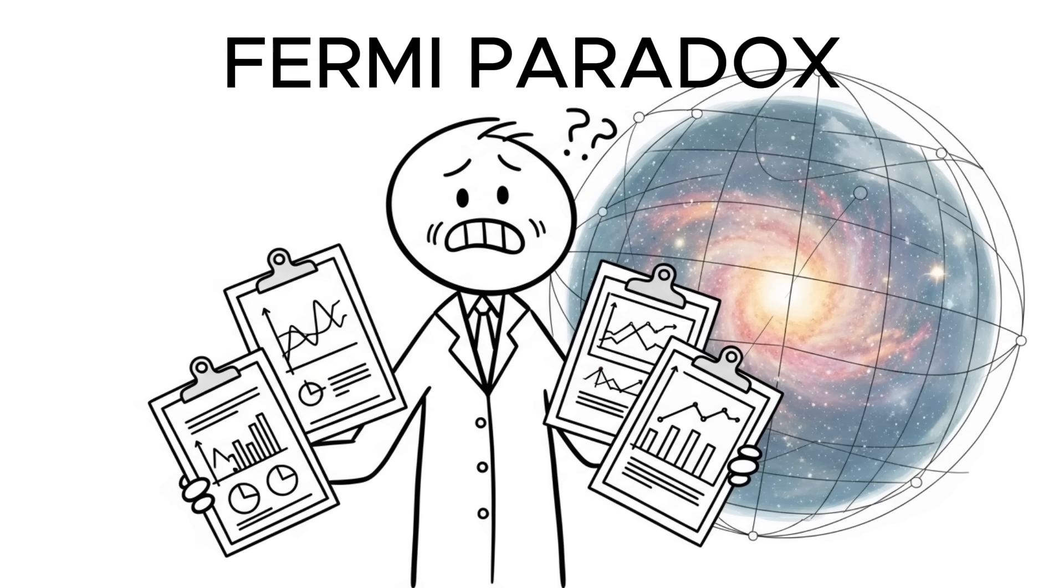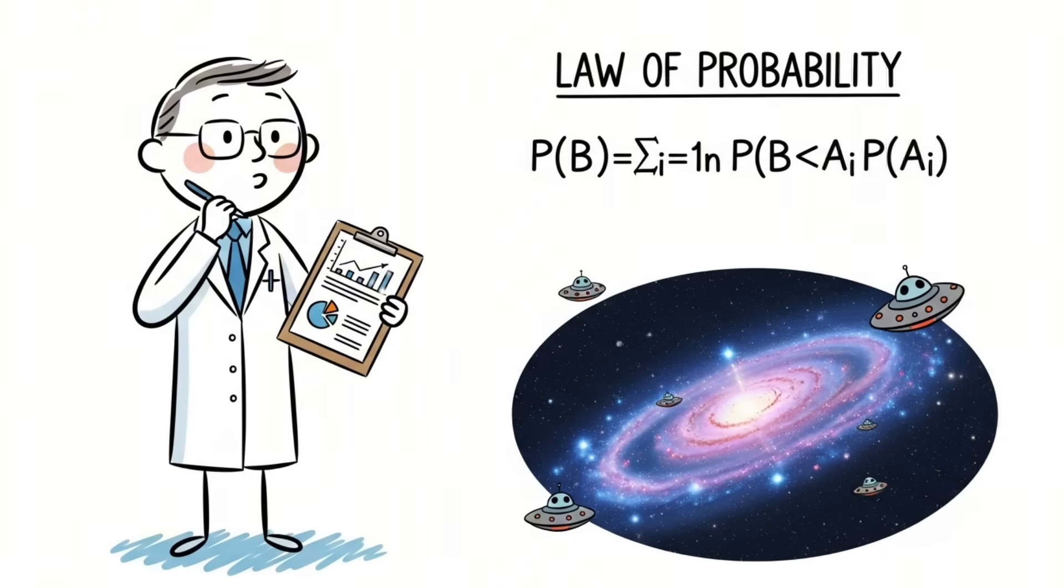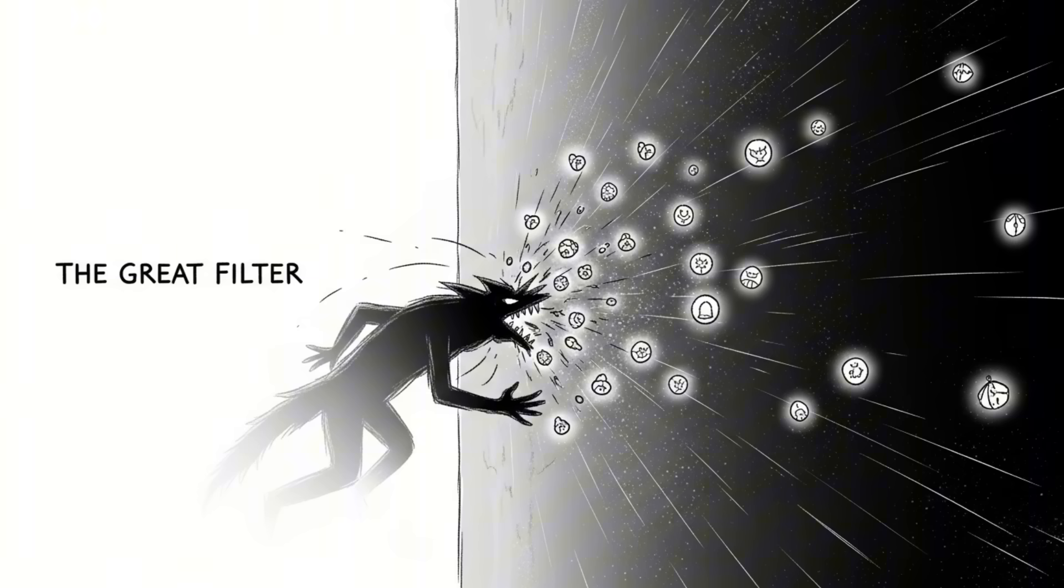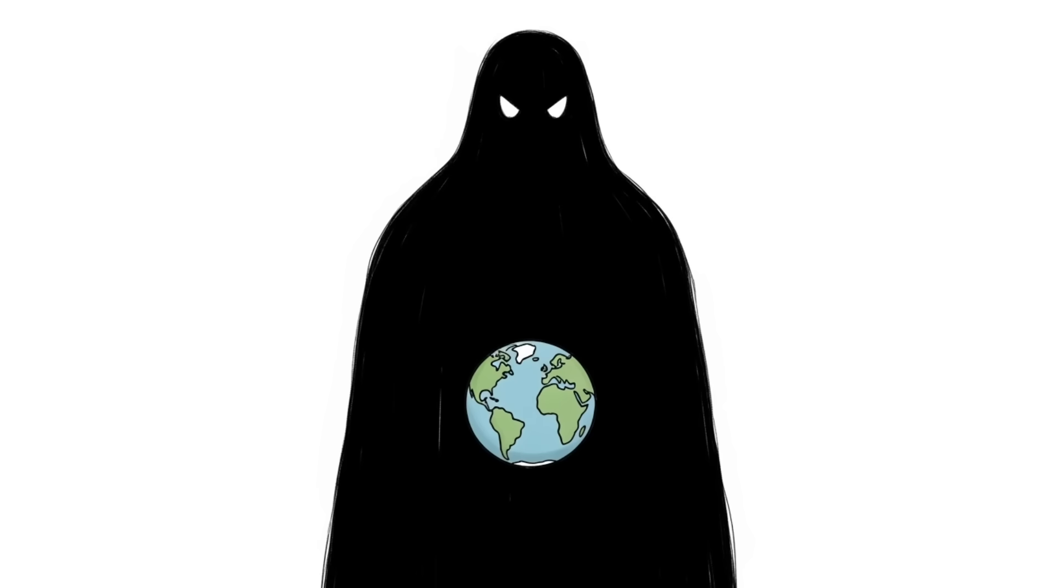This is the Fermi paradox, and it is one of the most terrifying questions science has. Because according to the law of probability, there is a high likelihood of extraterrestrial life. People came up with a wild theory called the great filter, where some predator or force destroys every advanced civilization before they can reach the stars. The silence of the universe might be the most terrifying warning of all.